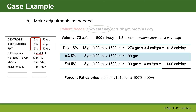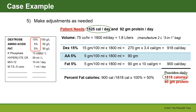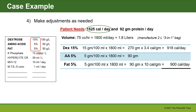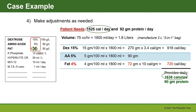Making adjustments as needed: the patient needs 1,525 calories per day and 92 grams of protein. The current TPN provides 1,818 calories per day and 90 grams of protein — more calories than needed. We can reduce fat from 5% to 4%, which reduces fat calories to 720 per day, for a total daily caloric intake of 1,638 calories — closer to the patient's needs — and reduces percent fat calories from 50% to 44%.